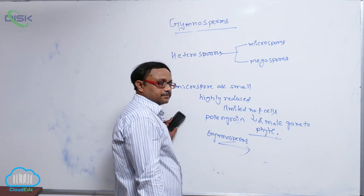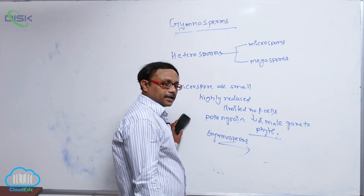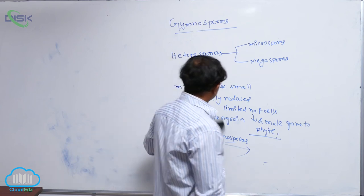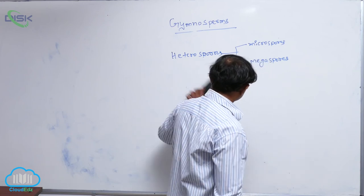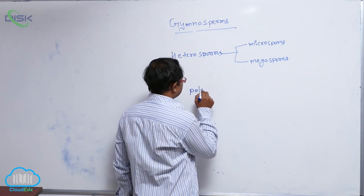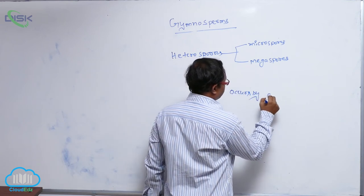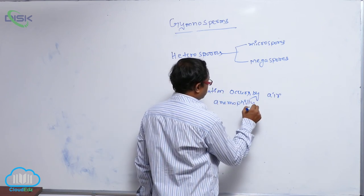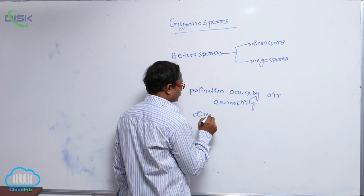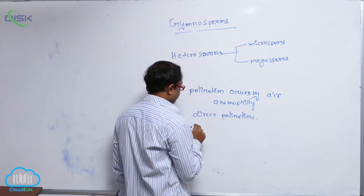At maturity, microspores are released from the male cone and reach the female cone or megasporophyll and megasporangia. This pollination takes place by air, known as anemophily. Pollination occurs by air — that is anemophily. This is known as direct pollination, which is present in gymnosperms.